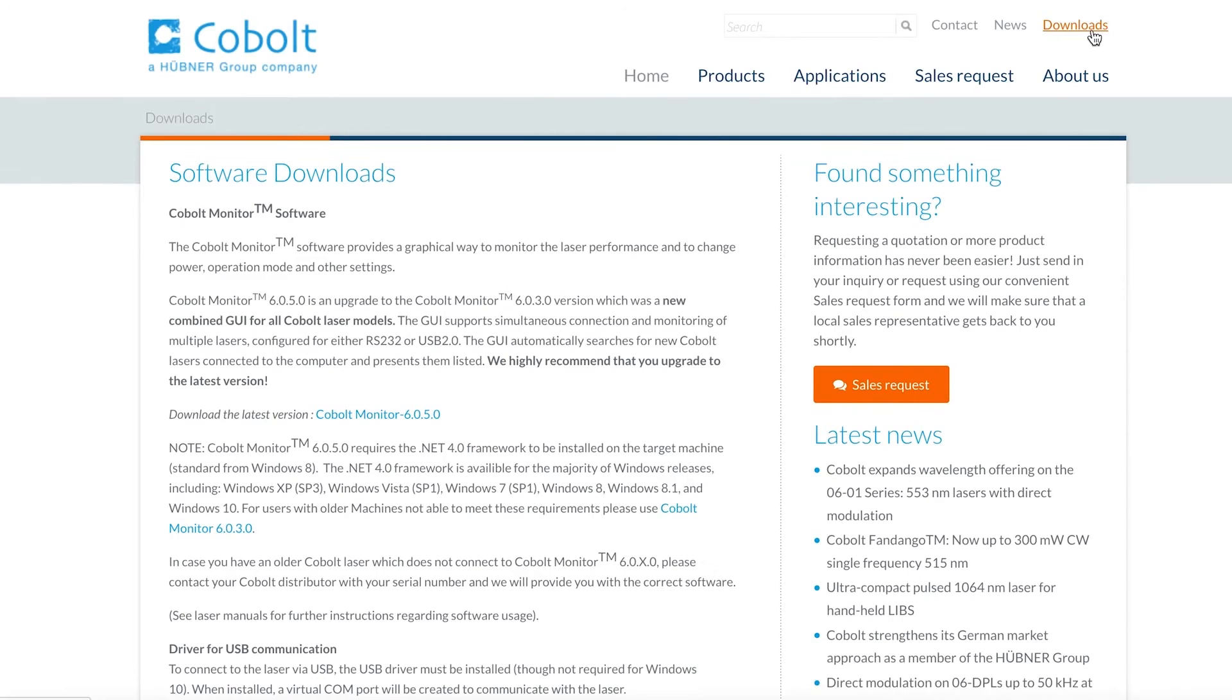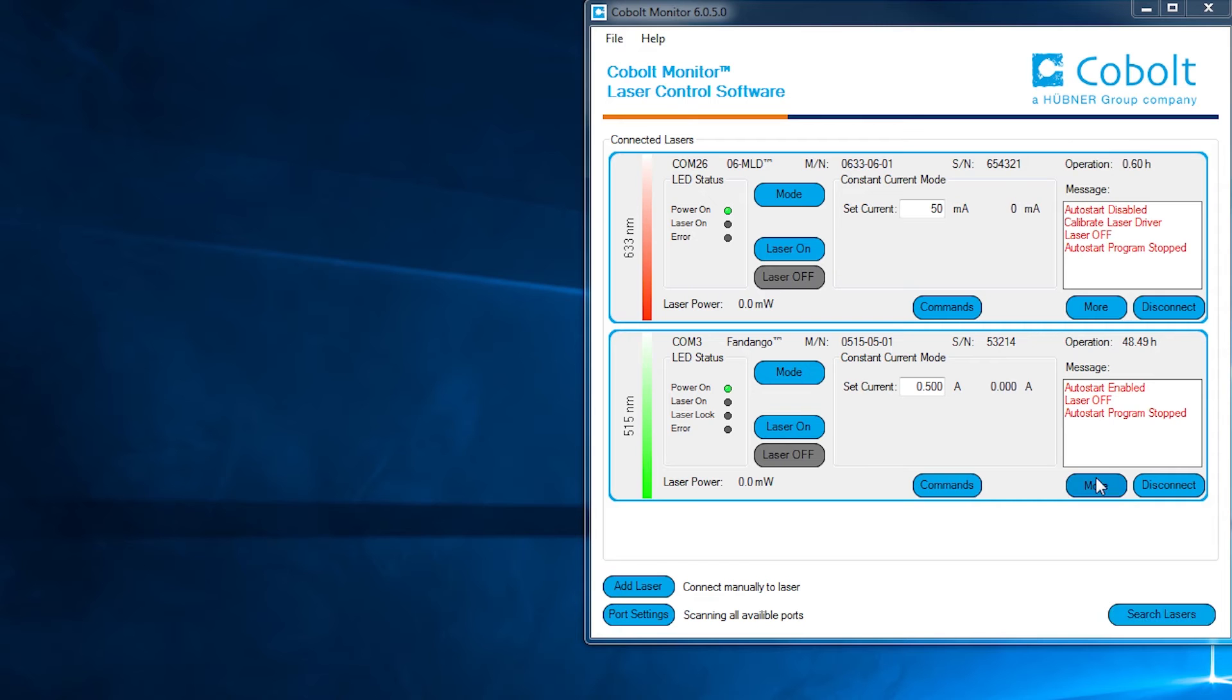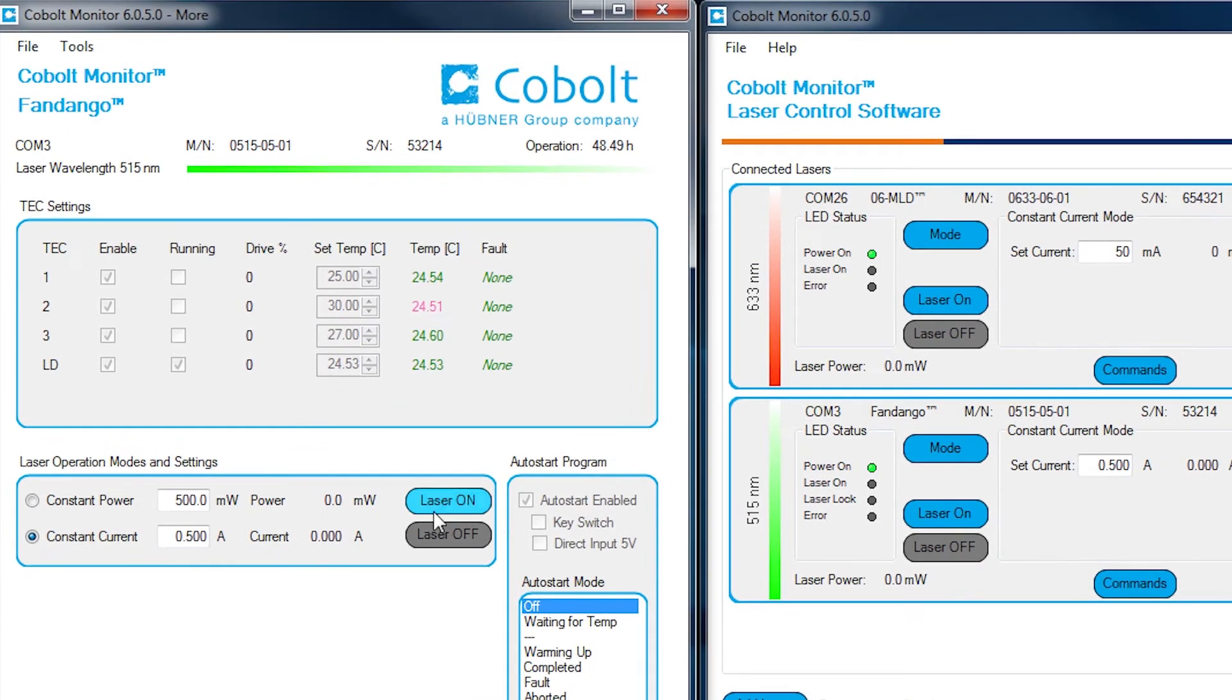The Cobalt software allows simultaneous control of multiple Cobalt lasers, which are automatically detected. Sub-levels allow more detailed parameters to be monitored.